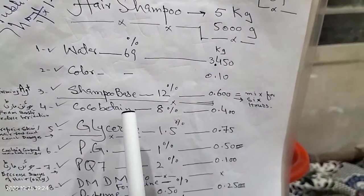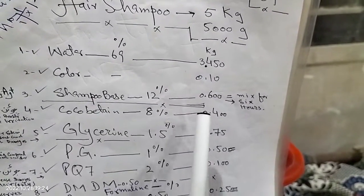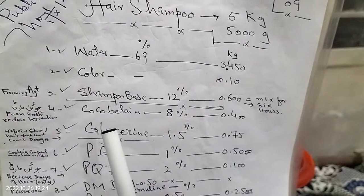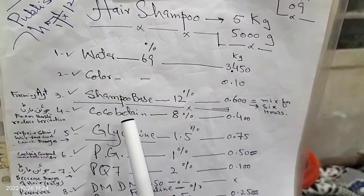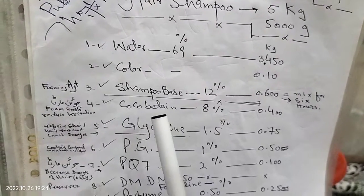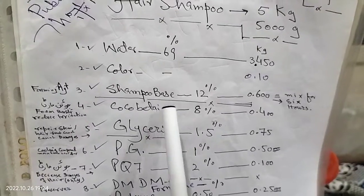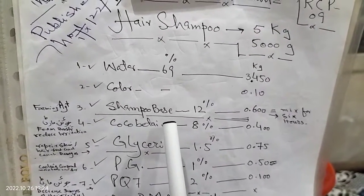Cocoa betaine 8%, 400 gram. Cocoa betaine is best conditioner, foaming agent. It is used only in hair shampoo.